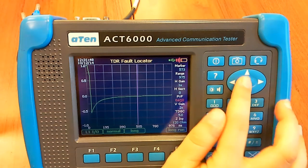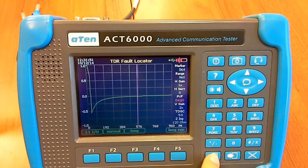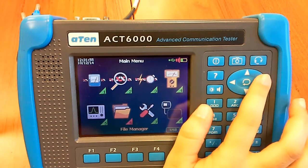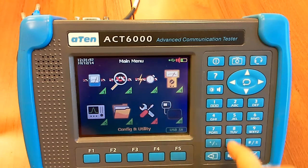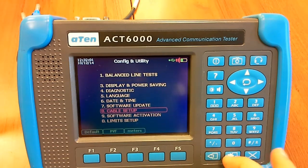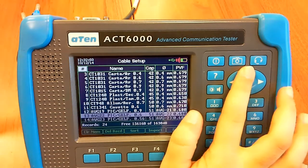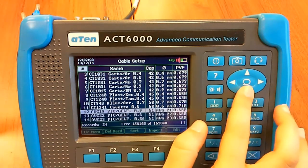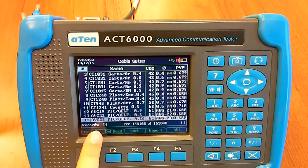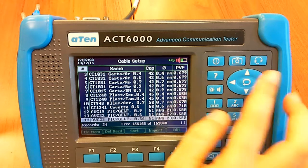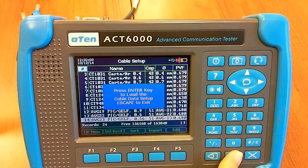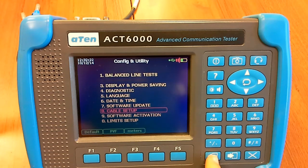Or if you want, you can go to the main menu, select Configuration and Utility, enter Cable Setup, and here you have all the cables. Now we select AWG23, 618, enter, press enter, OK, exit.